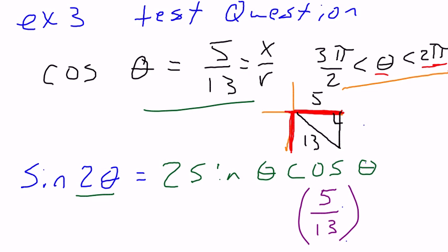So using Pythagorean's theorem, I can solve for this side, which would be negative 12, because 13 squared, 169, minus 5 squared, 25, is 144. Square root of 144 is 12.